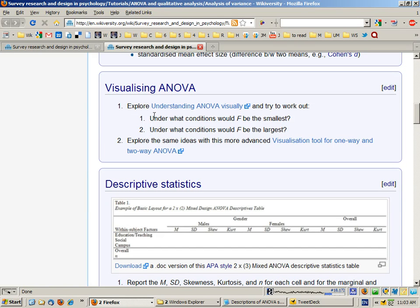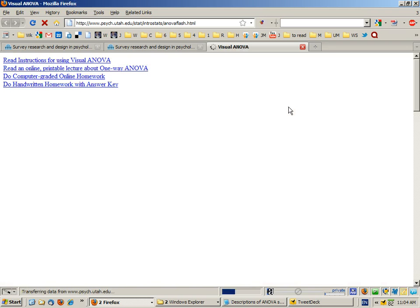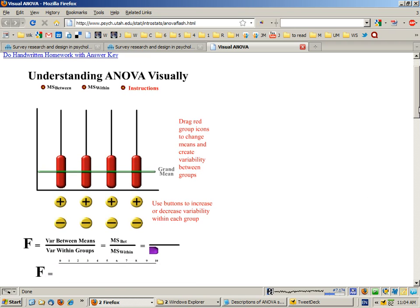Next we're going to look at an exercise that helps us to visualize how an ANOVA works. If you click on this link it will take you to a Java applet and this represents a one-way between groups ANOVA with four groups. This is like a bar graph or an error bar graph of the four means for the four groups.